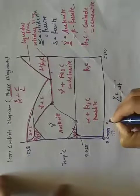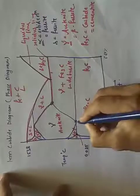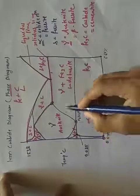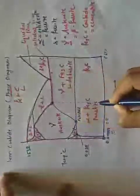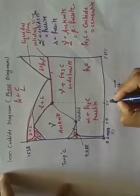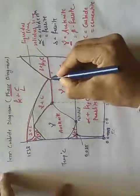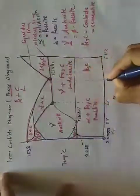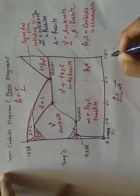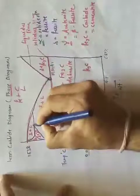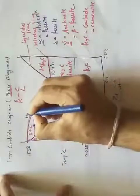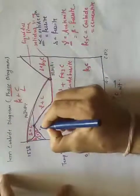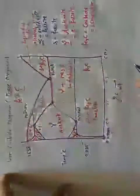At 0.8% carbon we call this point the eutectoid point. Continuing further, at 2% carbon addition we have another point. At 4.3% carbon we call this the eutectic point. There is also the peritectic point, where we have 0.1% carbon.